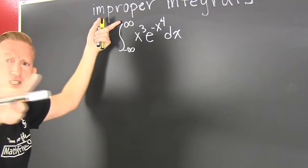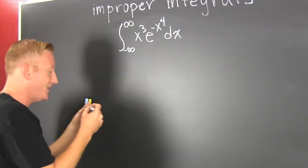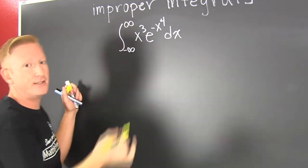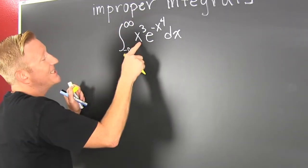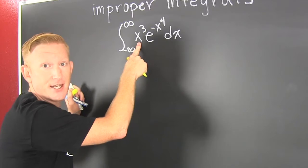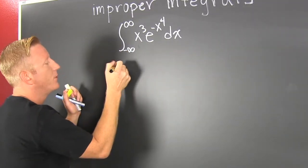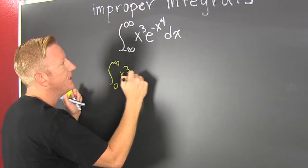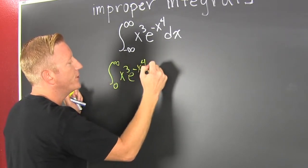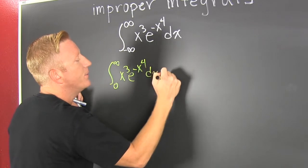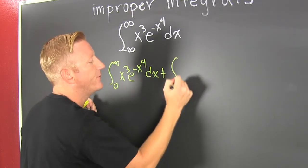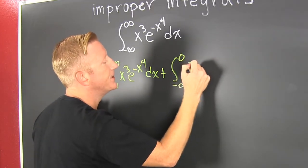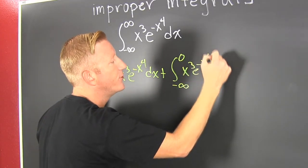But first, we need to fix it into two different integrals. We're going to pick a nice point in this domain — maybe zero. Because it's the killer, and it's going to be a nice point. So we're going to break it up into zero to infinity of x to the third times e to the minus x to the fourth dx, and then add that to minus infinity up to zero of x to the third times e to the minus x to the fourth dx.